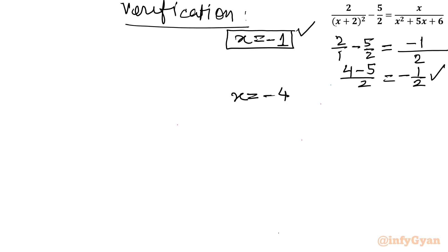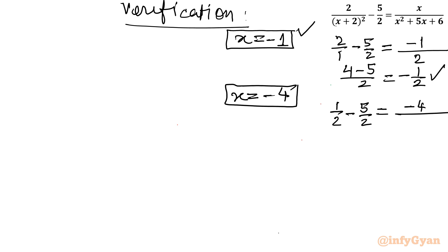For x = -4: 2 over (-4+2)² = 2 over 4 = 1/2, so left-hand side is 1/2 minus 5/2 = -4/2 = -2. Right-hand side: -4 over (16 - 20 + 6) = -4 over 2... checking: (-4+2)(-4+3) = (-2)(-1) = 2, so RHS = -4/2 = -2. Both sides equal -2, so x = -4 is also verified.